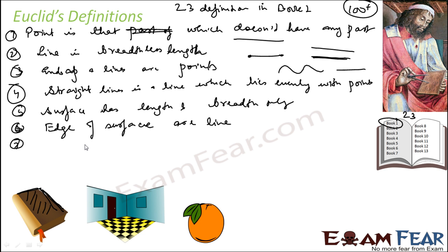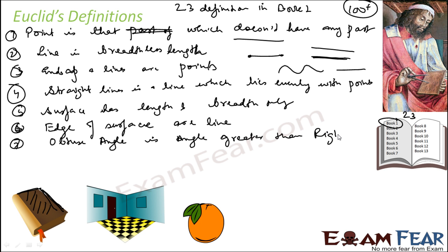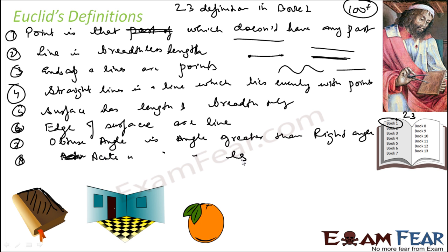He also defined obtuse angle. A right angle is a right angle, and any angle that is greater than a right angle is an obtuse angle. He also defined acute angle: an acute angle is an angle that is less than a right angle.